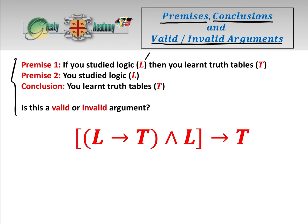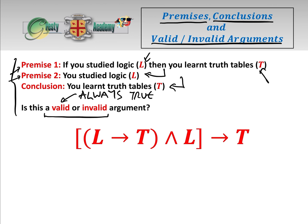Premise 1: if you studied logic, which we're going to call L, then you learnt truth tables, which we're going to call T. Premise 2 is you studied logic, and the conclusion is that you learnt truth tables. We have to say: is this a valid or invalid argument? The rules are: we have to assume that the two premises are true, and given that, is the conclusion always true? If the conclusion is always true, then it's valid. If not, then it's invalid.